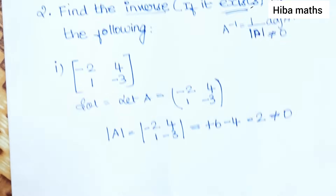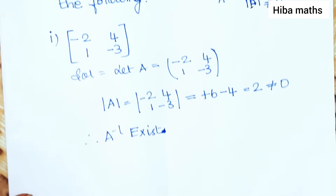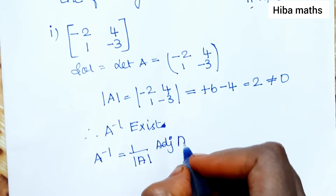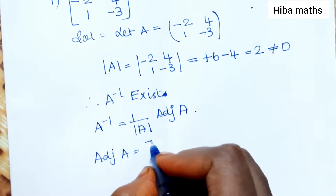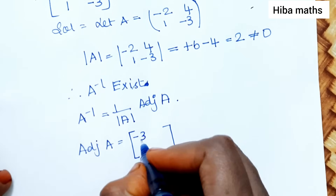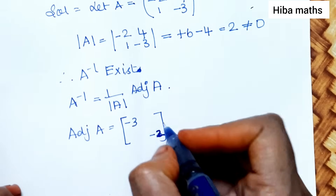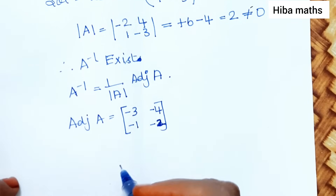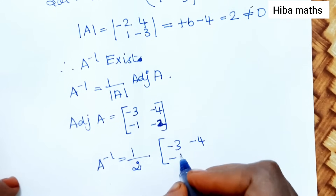Since 2 is not equal to 0, A inverse exists. Using the formula A inverse equals 1 by modulus of A into adjoint of A. For a 2 by 2 matrix, we directly swap and change signs. The adjoint of A is [-3, -4; -1, -2]. Therefore A inverse equals 1/2 times [-3, -4; -1, -2].